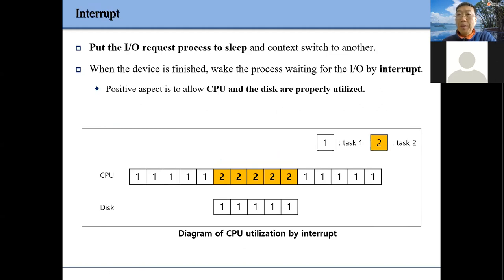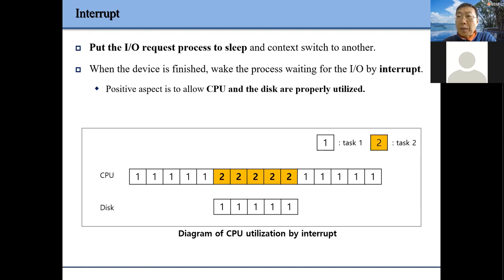A better approach is interrupt. The idea is very simple: when we issue IO commands, if the IO operation takes a very long time, we can switch to another task. As illustrated in this figure, when we have a disk IO, after we set up the commands and transfer data, we can switch to task two. In this way, disk IO and the CPU can work in parallel.